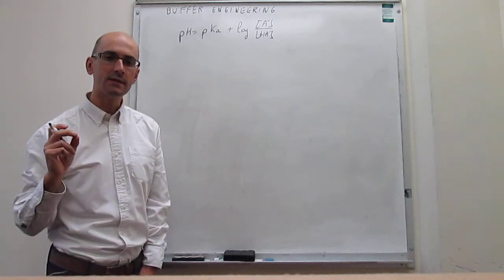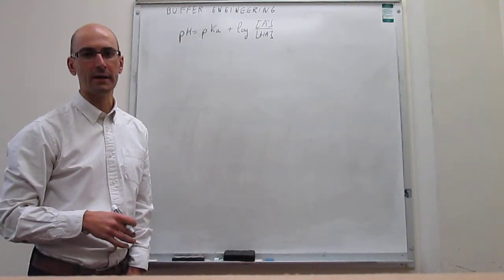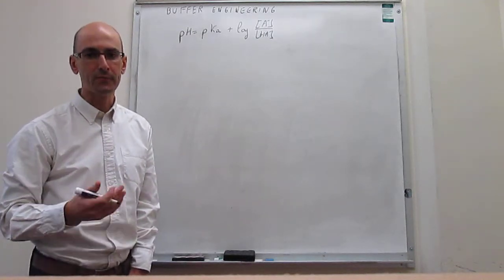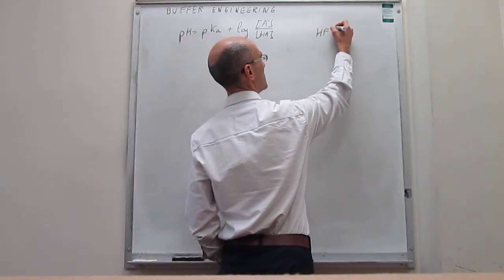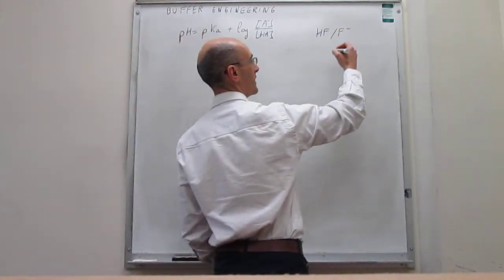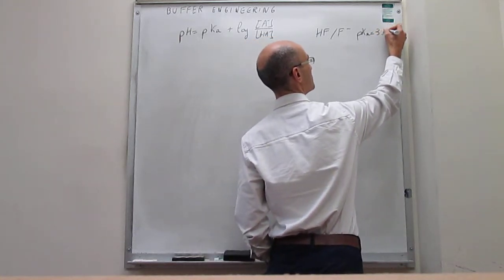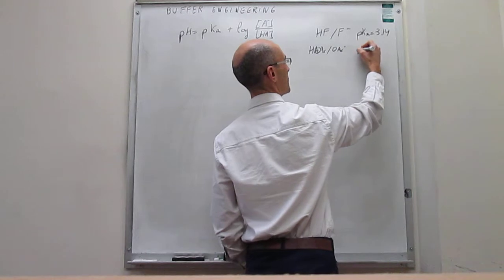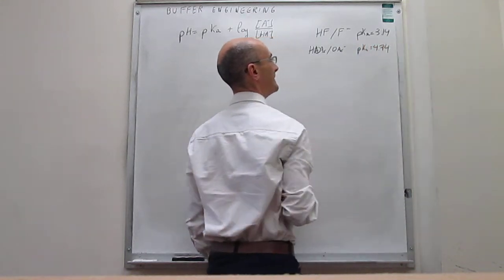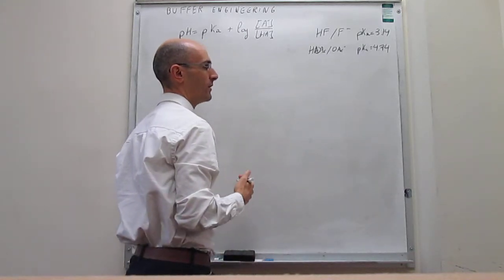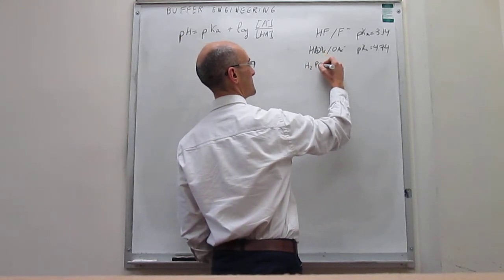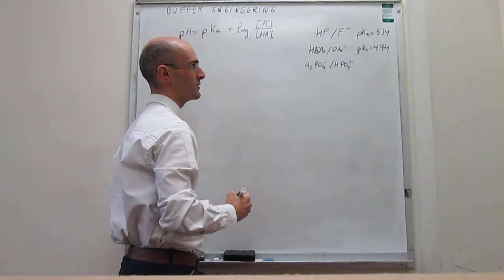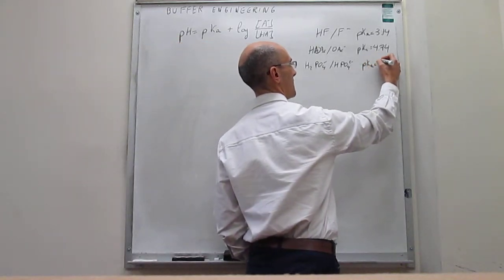The idea is to set a target pH, say 5, and then see how we would make a buffer solution at that pH with a known weak acid/conjugate base pair. For example, some known weak acid conjugate base buffer pairs: one system has a pKa of 3.14; acetic acid and acetate have a pKa of 4.74; and the dihydrogen phosphate/hydrogen phosphate buffer — which is the second equilibrium in phosphoric acid dissociation — has a pKa of 7.20.